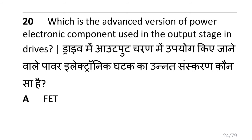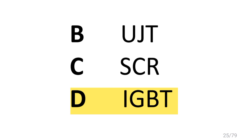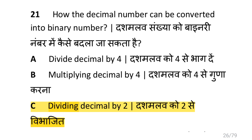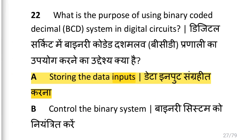Which is the re-advanced version of a power electronic component used in the output stage in a triac? i.e. IGBT. How can a decimal number be converted into a binary number? i.e. by dividing the decimal by 2.